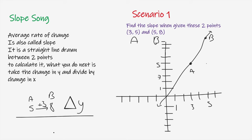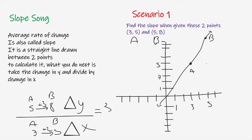Now let's find the change in x from point A to point B. In point A the x-value is 3, and in point B the x-value is 5. What do you have to do to get from 3 to 5? You add 2, so the change in x is +2. Now you have change in y (+3) divided by change in x (+2), which gives you the slope of 3/2 for this particular scenario.